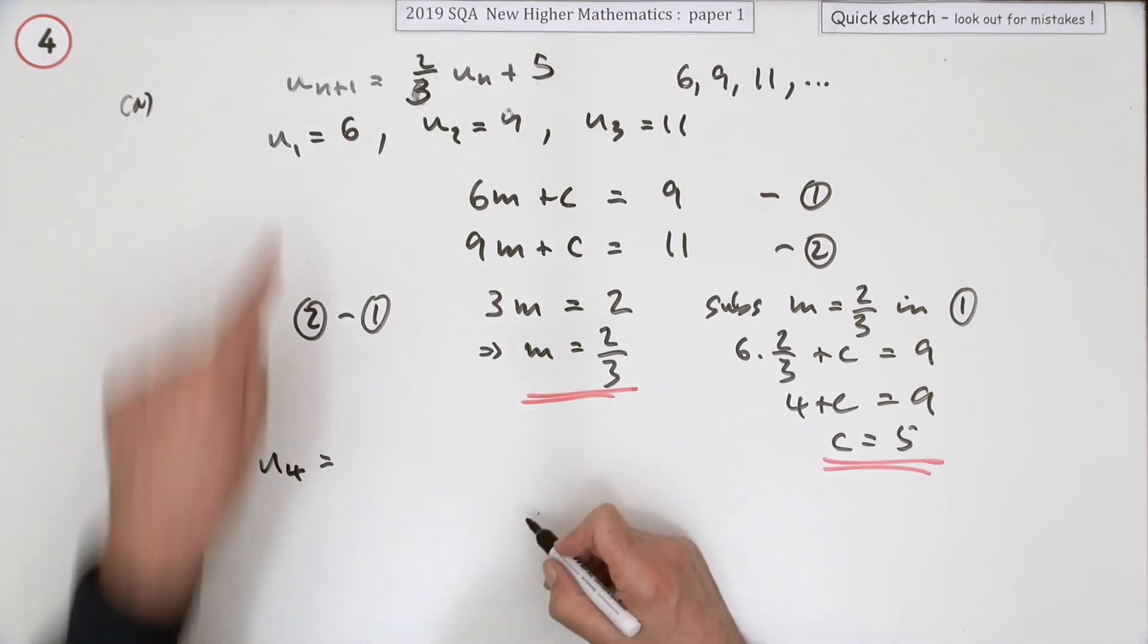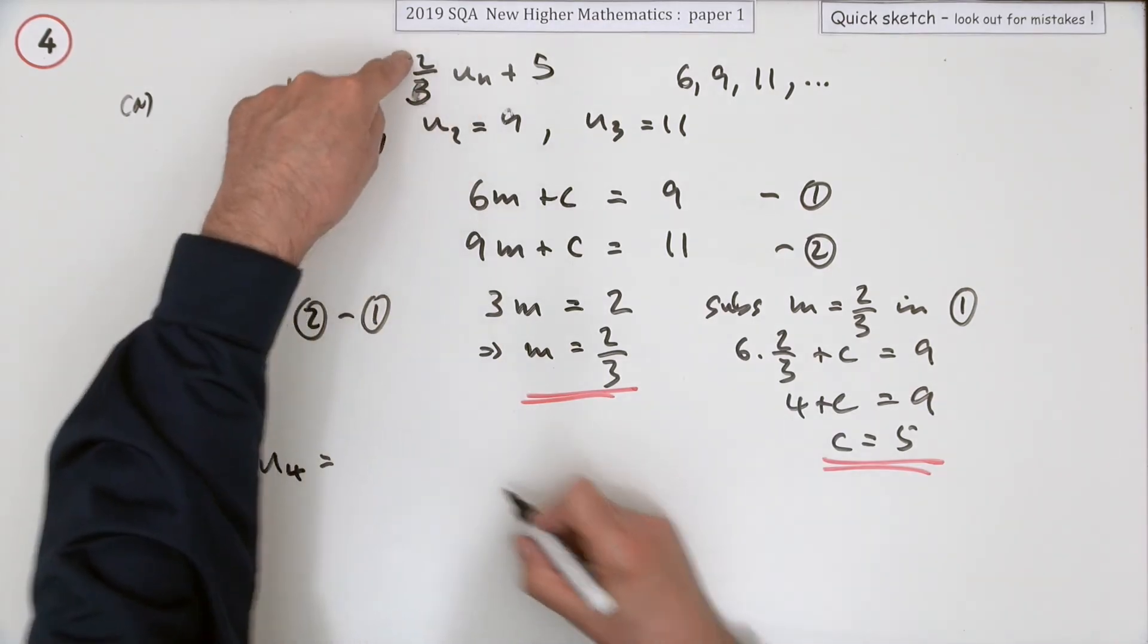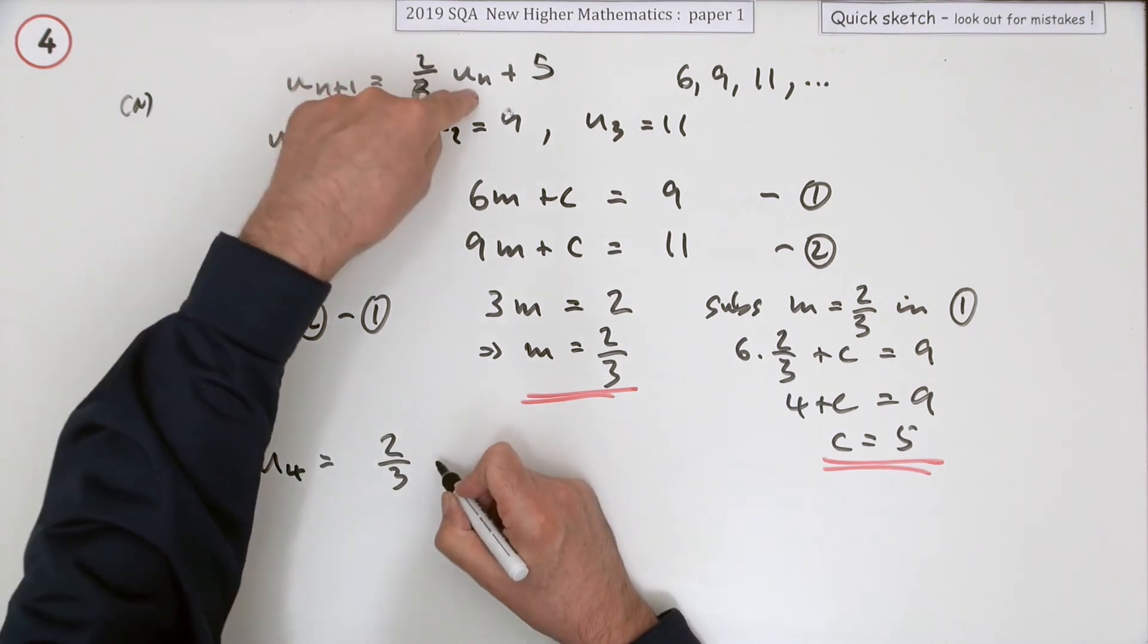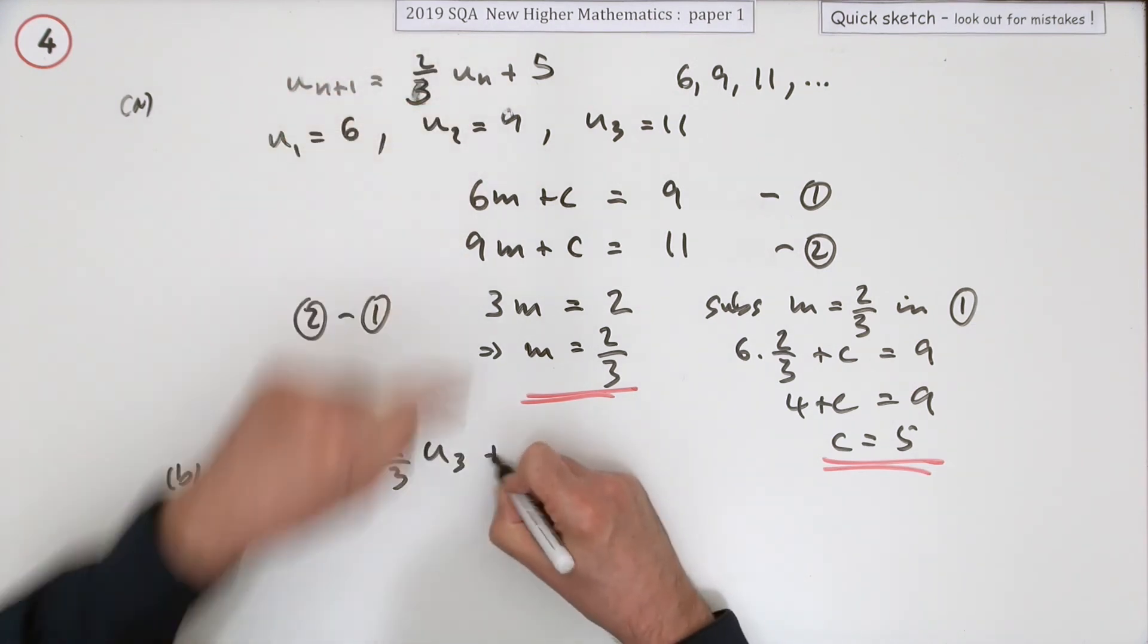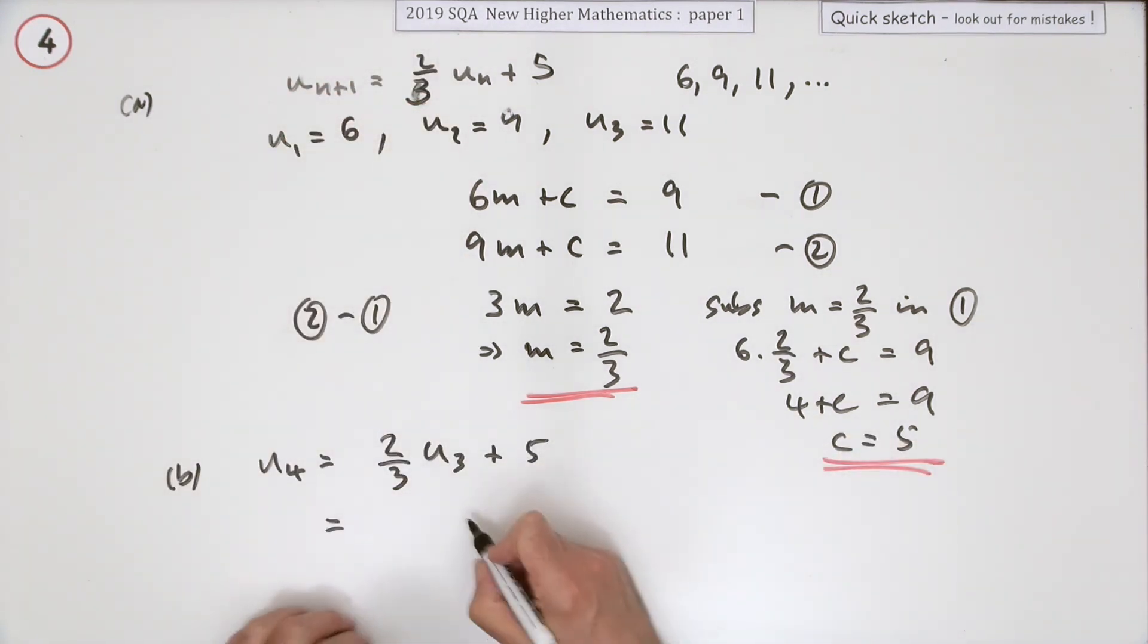So U₄ will be 2/3 of U₃. Just to put the pen down, which I didn't really need to do. So that's 2/3 of—and U₃ was unfortunately 11—plus 5. So that's not working out too nicely. There's no calculator. Well, that's 22/3 plus 5.